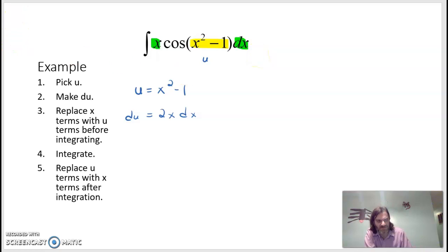So we're going to be able to replace everything. But we do need to make a final adjustment to our du. We'll divide out this 2. So we'll have 1 half du equal to x dx. So let's see what that means for us. We're going to rewrite our integration as 1 half cosine of u du. So the u is being replaced, is the replacement for x squared minus 1. And the 1 half du is the replacement for the x dx.